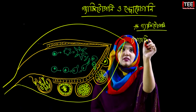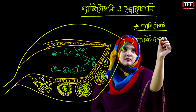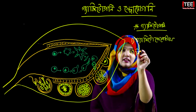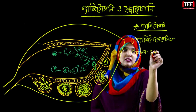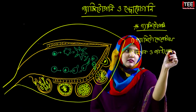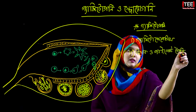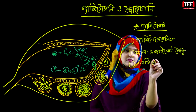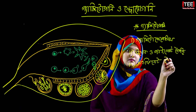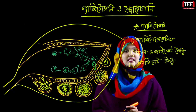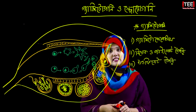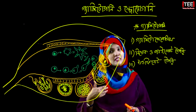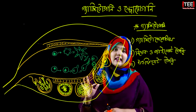Gametogony is the first step and gametogenesis is the second step. Gametogenesis involves two things: the formation of gametes through distinct stages.